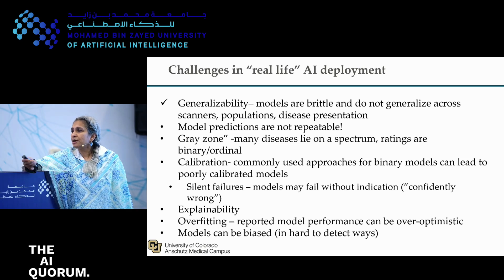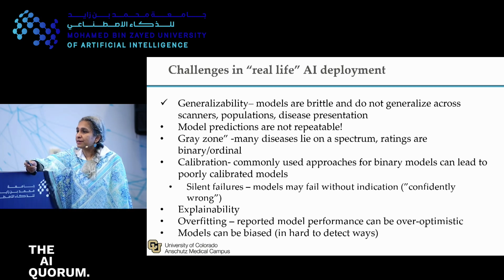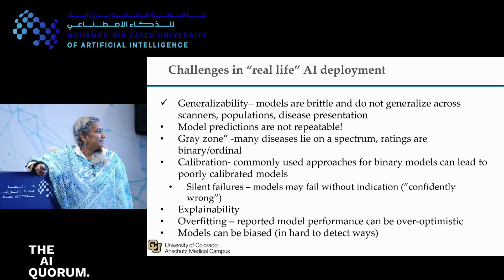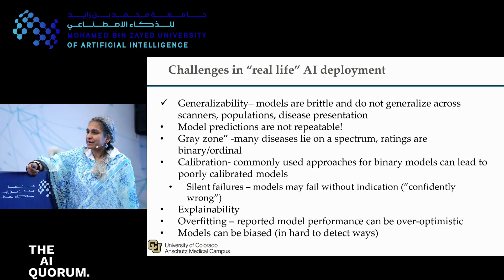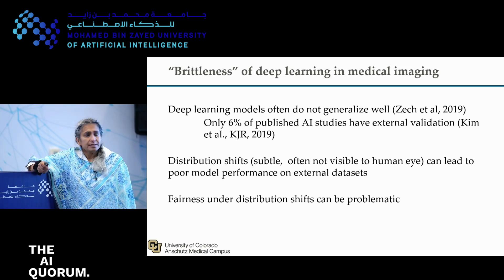Calibration is a huge issue — our models are not well calibrated, and very often we don't see calibration curves. There are lots of silent failures: the models are confidently wrong, and that's a big problem. What we hope is that we have measures of uncertainty that translate to the likelihood of being wrong, but what we see is confident errors. Explainability methods don't seem to work as well as we'd like them to. And the models can be biased in extremely hard-to-detect ways. Distribution shift in medical imaging has been talked about a lot.